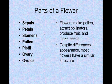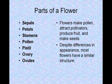There are many parts to a flower. We have sepals, petals, stamens, pollen, pistil, ovary, and the ovules, which you will see on a diagram on the next slide. Flowers make pollen, attract pollinators, produce fruit, and make seeds. Despite differences in appearance, most flowers have a similar structure.